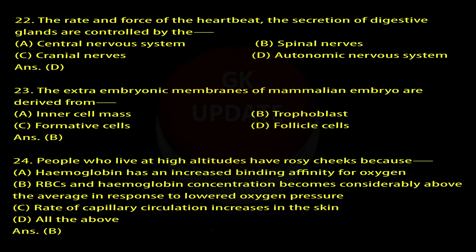Question 24: People who live at high altitudes have rosy cheeks because — A. Hemoglobin has an increased binding affinity for oxygen, B. RBCs and hemoglobin concentration becomes considerably above the average in response to lowered oxygen pressure, C. Rate of capillary circulation increases in the skin, D. All the above. Answer: B.